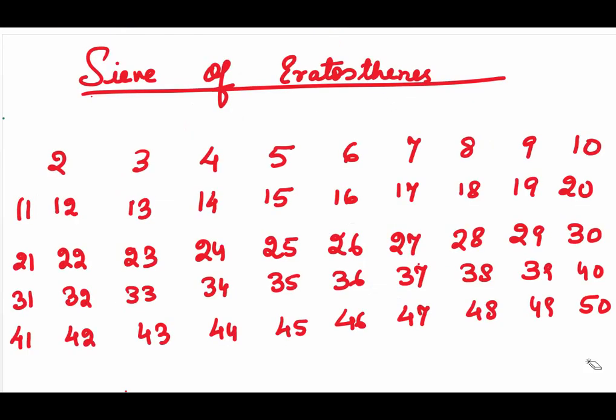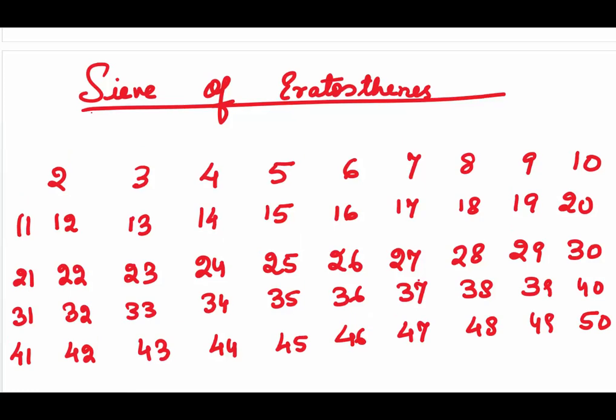Let's come to sieve of Eratosthenes. This method was given by Eratosthenes who was the chief librarian at the library of Alexandria. He existed from 271 to 194 BC. Now, to explain this method, I have taken numbers from 1 to number 50. I have not written number 1 as 1 is neither prime nor composite. Now, we have to find how many primes are there up to number 50.